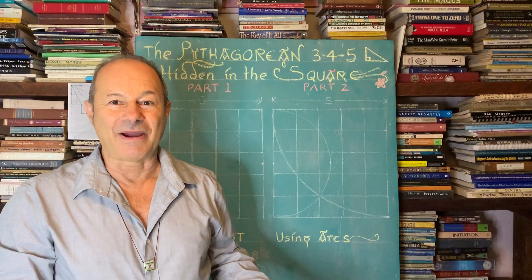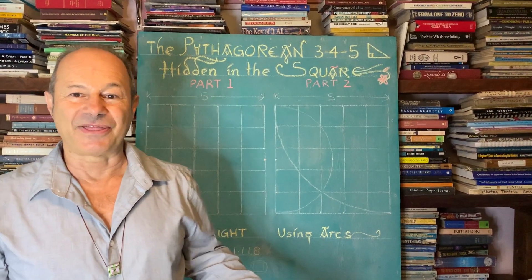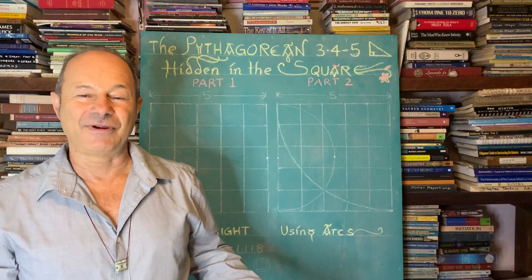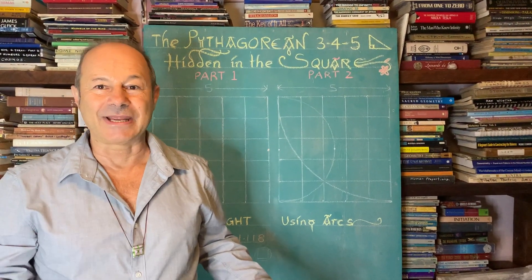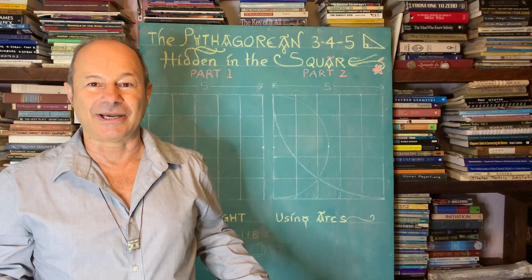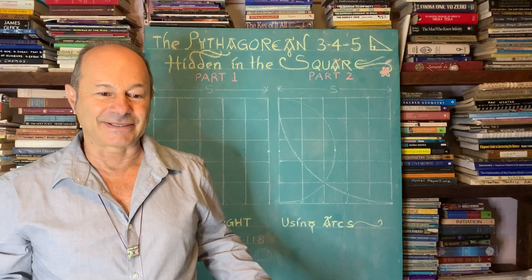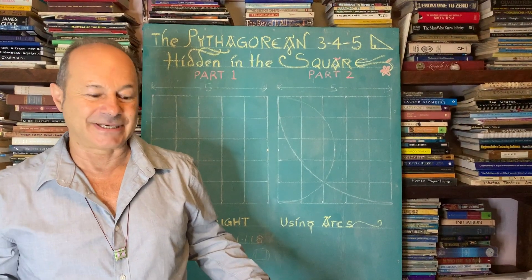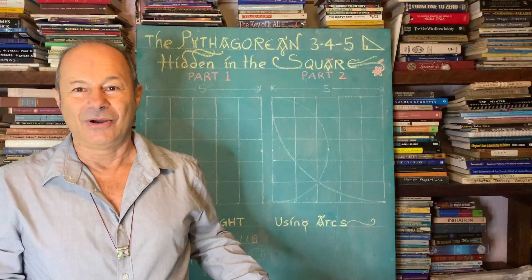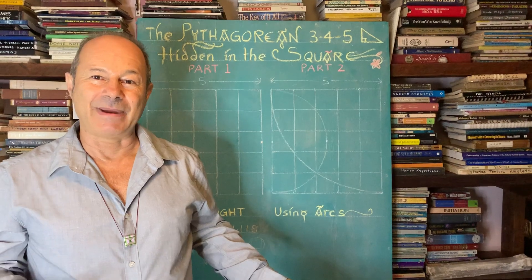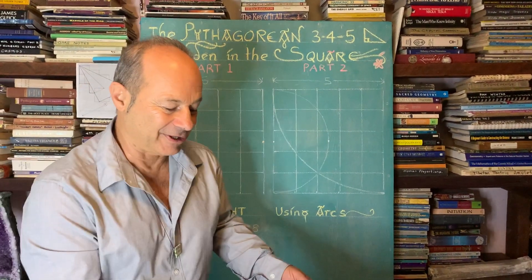Today I'd like to share my fascination with the Pythagorean 3-4-5 triangle. It has its history in early India and China, so it's one of the gems of all mathematics, and I want to show some esoteric or secret information that's not commonly known about the 3-4-5 triangle.